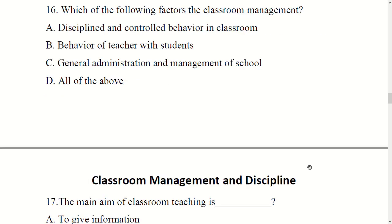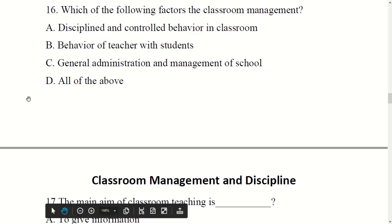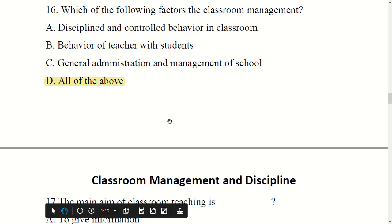Which of the following factors affect classroom management? Options: discipline and control of behavior in classroom, behavior of teacher with student, general administration and management of school, or all of the above. The right answer is option D: all of the above.